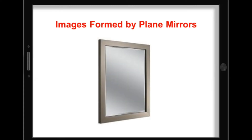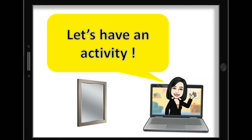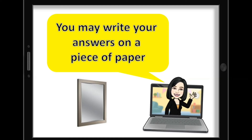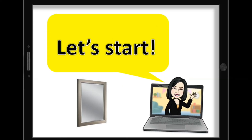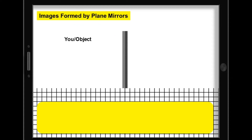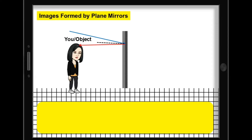Let's apply what you have learned and describe the image formed by plane mirrors. Let's have an activity: describe the image formed by a plane mirror. You may write your answers on a piece of paper. Analyze the figure that will be presented. This is a plane mirror — this is the reflective side or the front of the mirror, the back side or behind the mirror, and this is you standing in front of the mirror. An incident ray strikes the mirror and reflects. Another incident ray strikes the mirror and reflects. Extending the reflected rays behind the mirror, they merge at one point, forming an image of you.